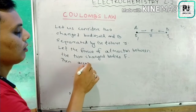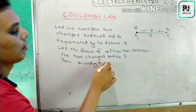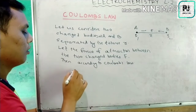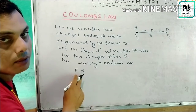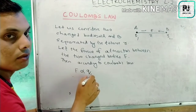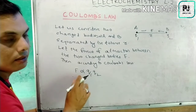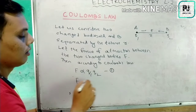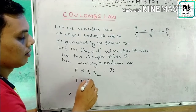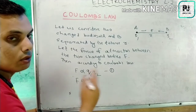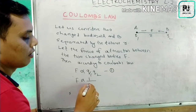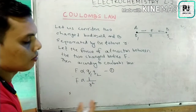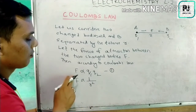According to Coulomb's Law, the force of attraction is directly proportional to the product of the charges, that is q1 into q2 — this is equation one. It is also inversely proportional to the square of the distance r, written as 1 over r squared — this is equation two. In direct proportionality, if F increases, the product q1 times q2 also increases.